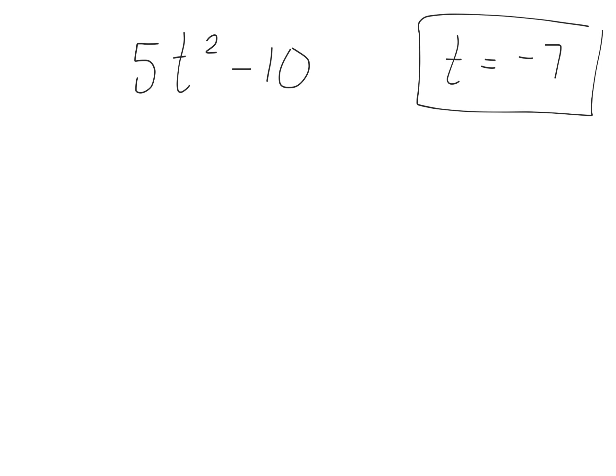So this question gives you an expression, which is 5t squared minus 10, and they give you the value of t. They're telling you that t represents negative 7.